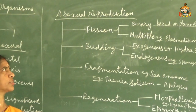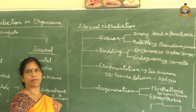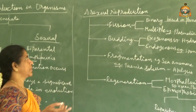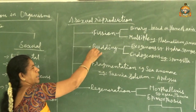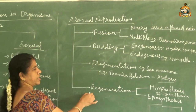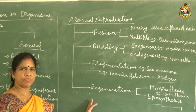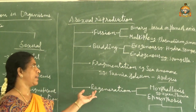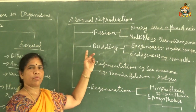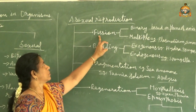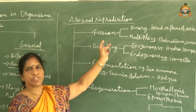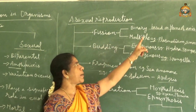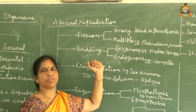Let us look at asexual reproduction in detail. There are different modes: fission, budding, fragmentation, and regeneration, among others. Fission means division, and there are two types - binary fission and multiple fission. Binary fission means the parent body divides into two daughter cells.